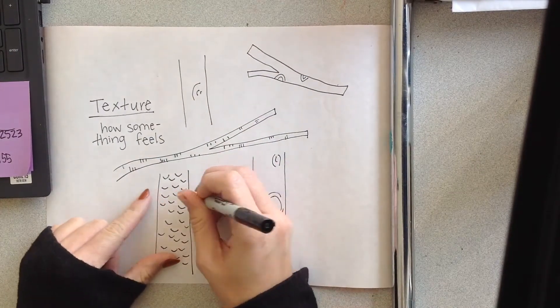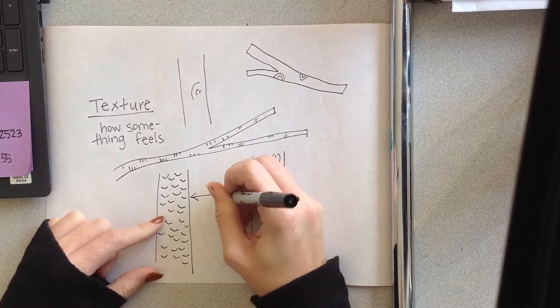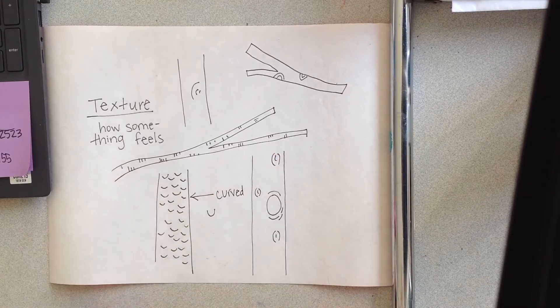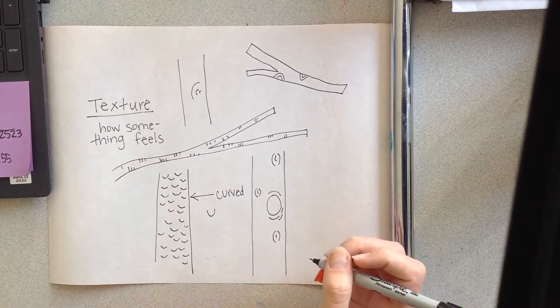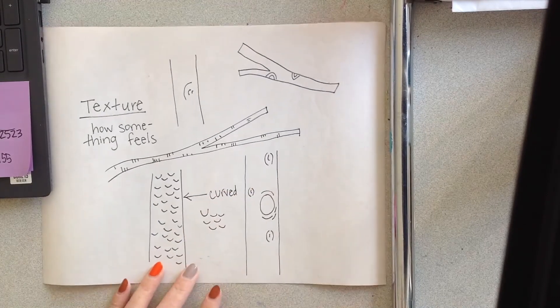So the first texture I noticed a lot in different trees is a curved line. This curved line looks kind of like a U, and if you want to include these little curved lines on your trees, that would be a great idea.